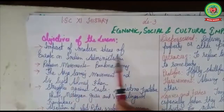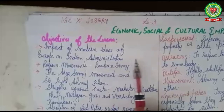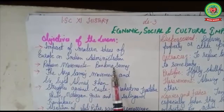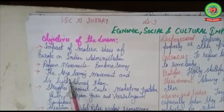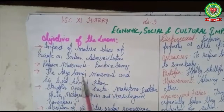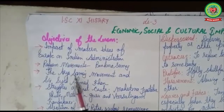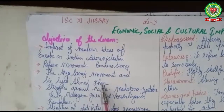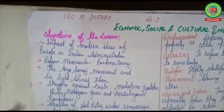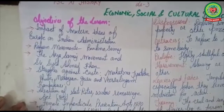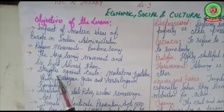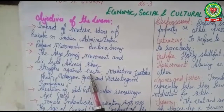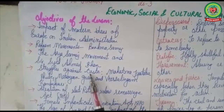We had already discussed the impact of modern ideas of Europe on Indian administration and Brahmo Samaj in the last session. We had also discussed two reform movements: the Arya Samaj movement and Syed Ahmed Khan with his Aligarh movement. In today's session, we are going to discuss the struggle against caste — those reformers who stood against the caste system in India.